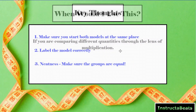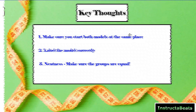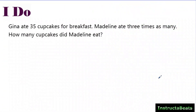Now let's take a look at some key thoughts. Very similar to the additive comparison model, you want to make sure you start both models at the same place, because you're trying to visually show the relationship between them. So if they both start at zero, zero has got to be in the same place. Number two, you want to label the model correctly. Number three, neatness — you want to make sure the groups are equal, because multiplication and division are about equal groups. So when you draw them, make sure the boxes are equal to each other.